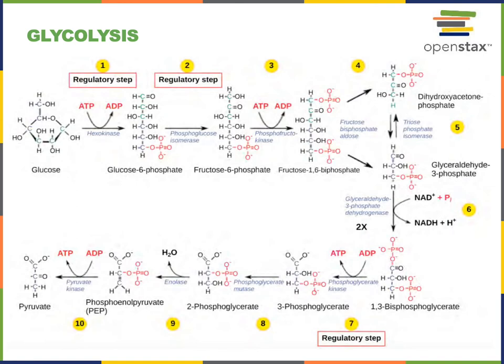The fourth step of glycolysis converts fructose-1,6-bisphosphate, which is a six-carbon molecule, into dihydroxyacetone phosphate and glyceraldehyde-3-phosphate, which are both three-carbon molecules. Aldolase is the enzyme that catalyzes this reaction. Then in the fifth step of glycolysis, triose phosphate isomerase converts dihydroxyacetone phosphate to glyceraldehyde-3-phosphate.